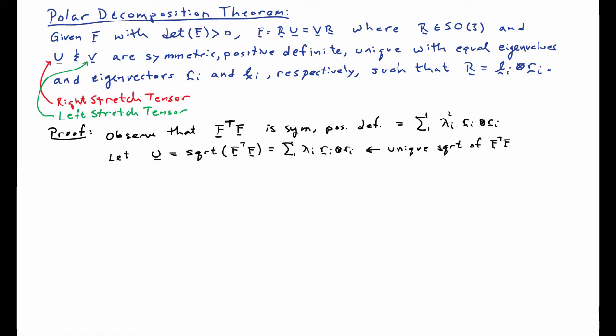Let's go ahead and assign U to be the unique matrix square root of F transpose F. If I do that, I'll also have a spectral representation for U, which is the sum of λ_i R_i tensor outer product R_i. This is the unique symmetric positive definite square root of F transpose F. I can always compute F transpose F and also compute its matrix square root.